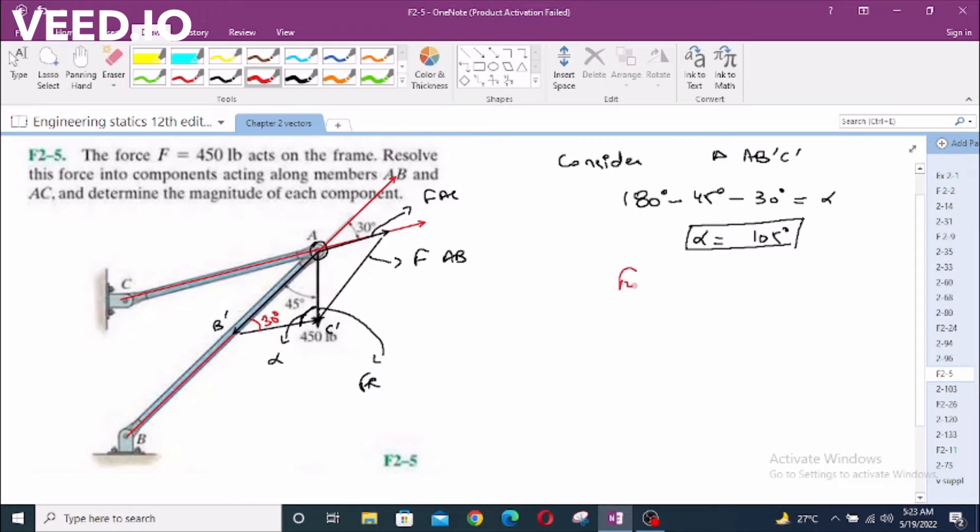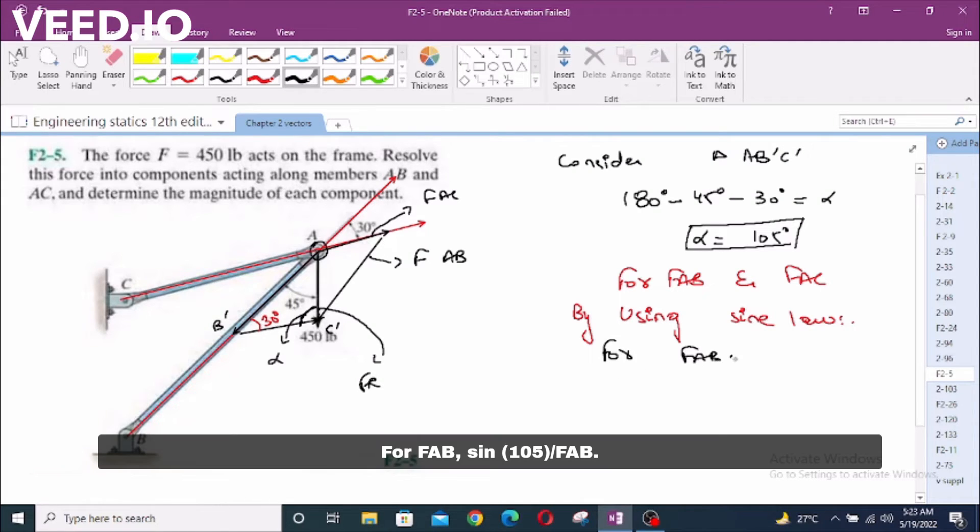For F_AB and F_AC, by using sine law: For F_AB, sin 105 divided by this A to B component F_AB equals sin 30 degrees over FR.